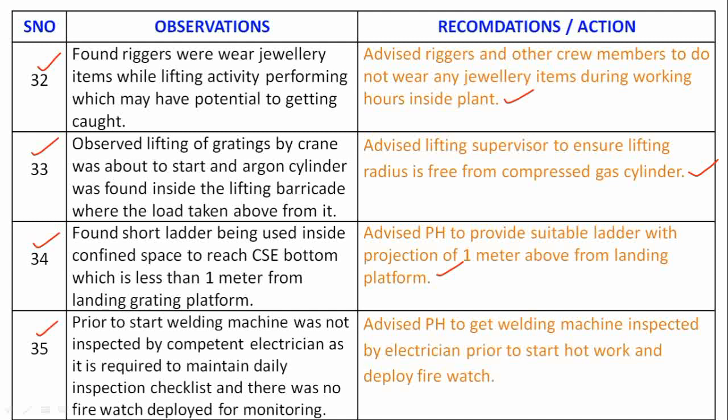Observation 35: The welding machine was not inspected by a competent electrician prior to start, as required by the daily inspection checklist, and there was no fire watch deployed for monitoring. Recommendation: Advise the permit holder to get the welding machine inspected by an electrician prior to starting hot work and to deploy a fire watch.